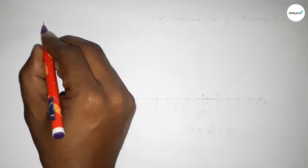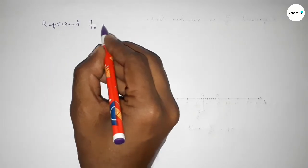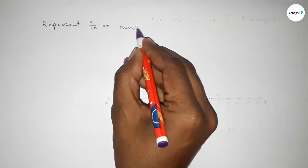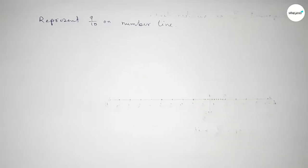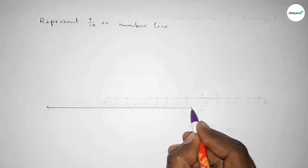Hi everyone, welcome to SA Share Classes. Today in this video we have to represent 9 over 10 on a number line. So let's start the video. First of all, we have to draw here a number line. So first, drawing here a line and taking arrow marks on both sides. Next, we have to mark the numbers on the line.